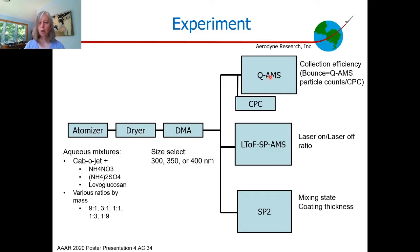We measured these particles with a quadrupole aerosol mass spectrometer, which is very good for measuring bounce. Because the quadrupole sits on a single m/z, it can detect fairly small amounts of material. We compared the number of particles counted with the mass spectrometer to the number counted with the CPC, giving us a measure of bounce. We had an SP-AMS to measure the laser-on to laser-off ratios. We also had an SP2 borrowed from Brookhaven National Labs to give us information about the mixing state of the particles and potentially the coating thickness.